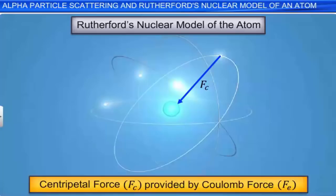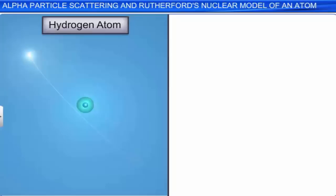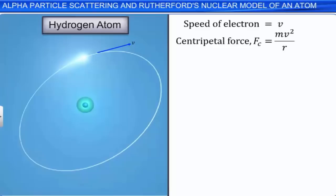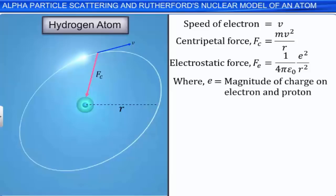Let us apply this concept to the case of a hydrogen atom. A hydrogen atom consists of one electron revolving around its nucleus, which is actually the proton. For the electron revolving with speed v, the centripetal force Fc is equal to mv²/r. The electrostatic force of attraction Fe between the electron and the proton, separated by a distance r, is given by Fe = (1/4πε₀) × e²/r². For dynamically stable orbits, Fc equals Fe, so mv²/r = (1/4πε₀) × e²/r² — let this be equation 1. On simplifying, the radius r = e²/(4πε₀mv²) — equation 2. And v² = e²/(4πε₀mr) — equation 3.